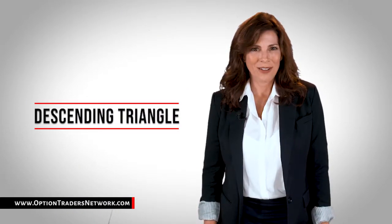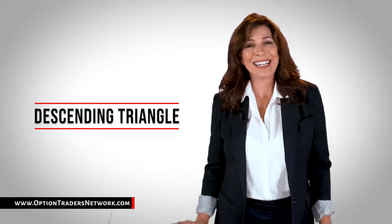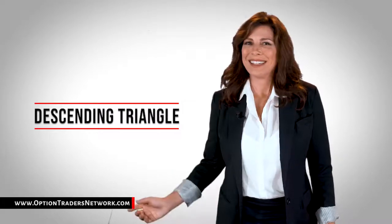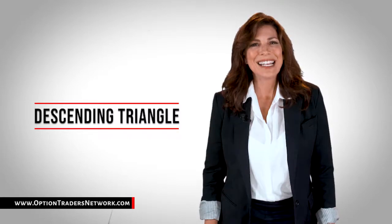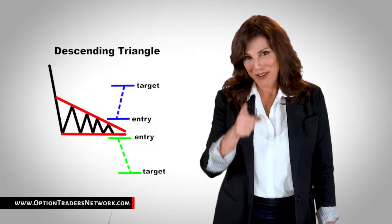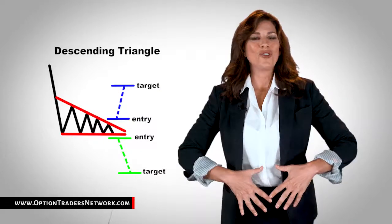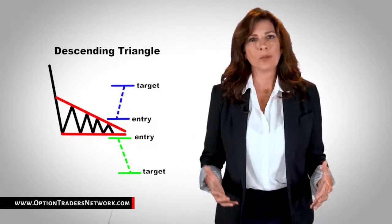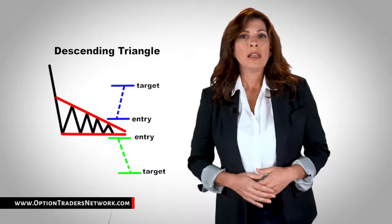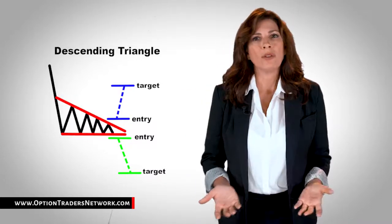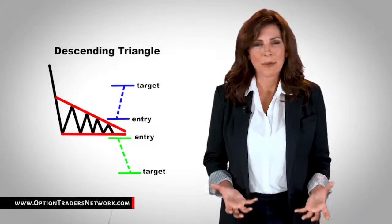Descending triangle. As you probably guessed, descending triangles are the exact opposite of ascending triangles. In descending triangles, there is a string of lower highs which forms the upper line. The lower line is a support level in which the price cannot seem to break.